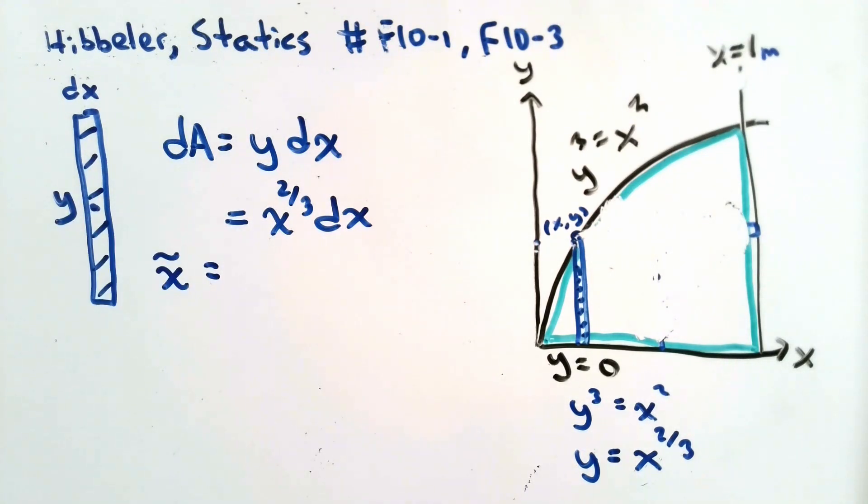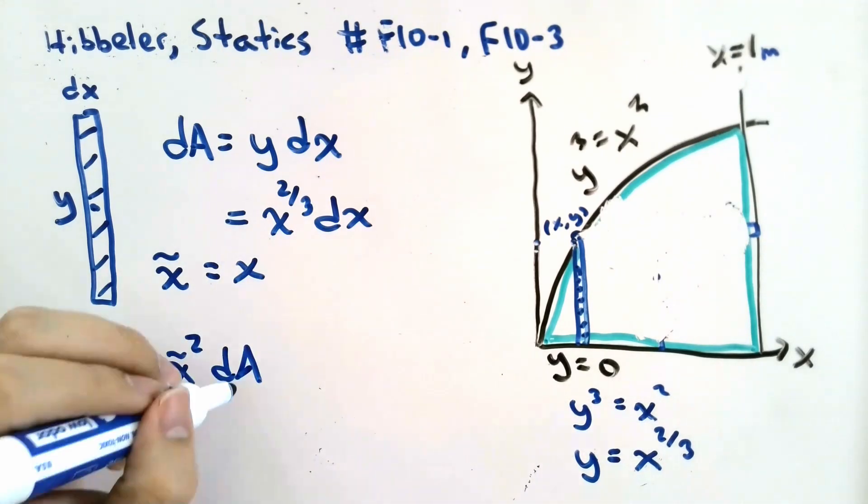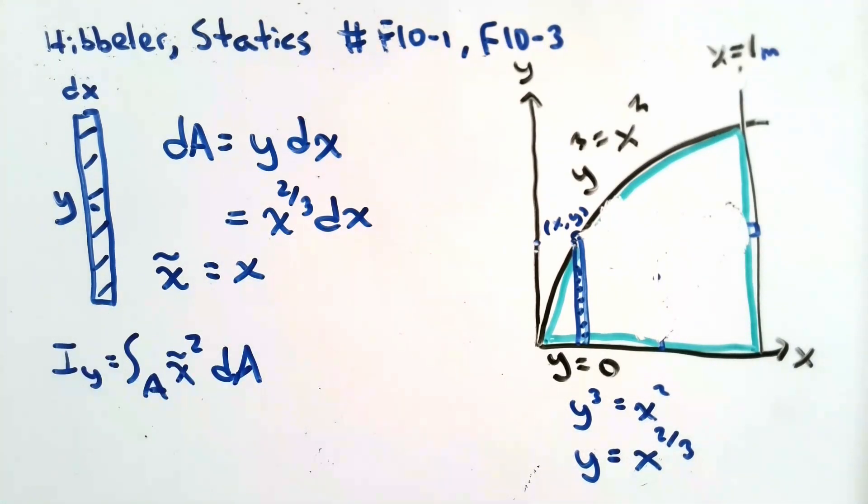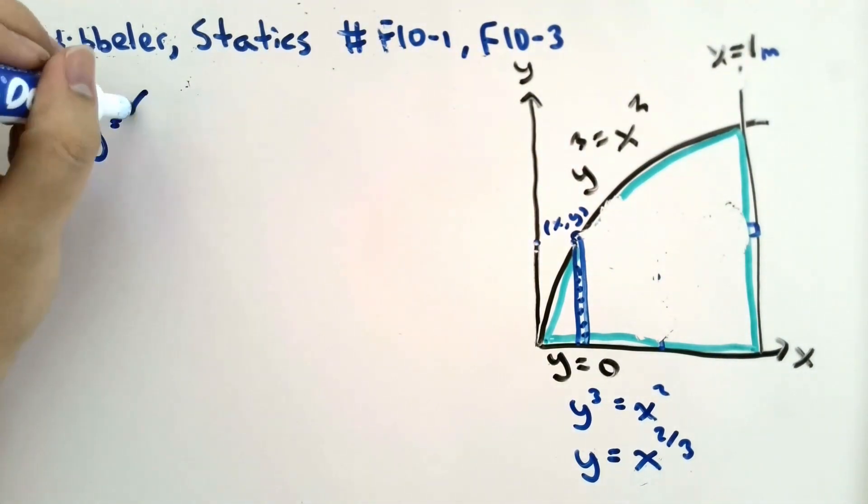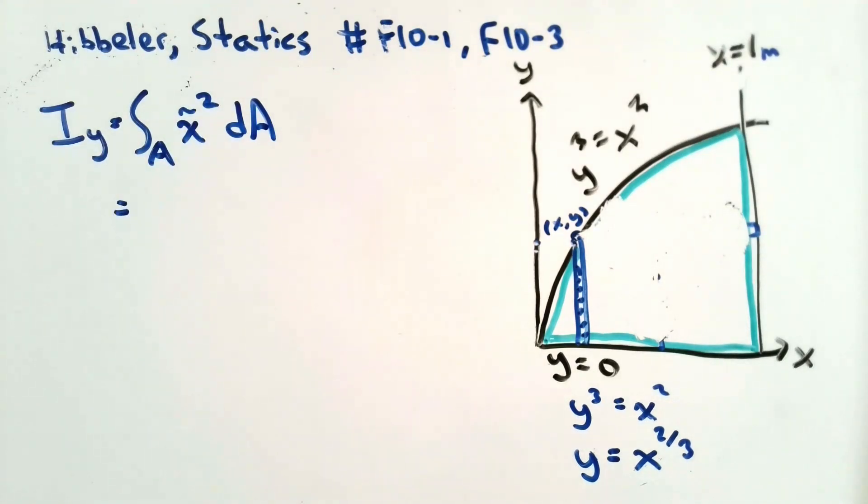So now we can use this relationship to evaluate our integral in terms of x. For this particular differential area, the coordinate of the centroid x squiggly will be at x. So the moment of inertia about the y-axis should be equal to the integral of x squiggly squared evaluated over an area dA. Let's solve this now. First, we know that x squiggly equals x. We also know that dA equals x to the 2 thirds times dx. This integral is evaluated from x equals 0 to x equals 1.